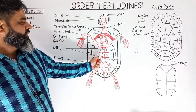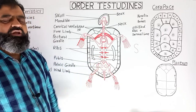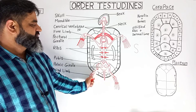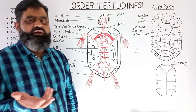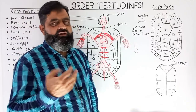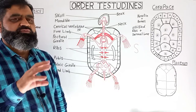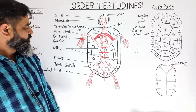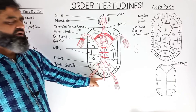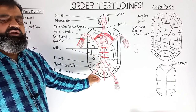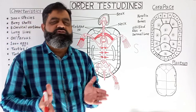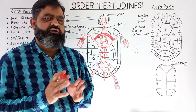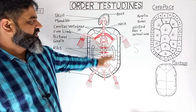Posterior to the lumbar and thoracic vertebrae is the pelvic girdle region, with bones such as the ischium and pubis, to which the hind limbs are attached. The hind limbs include the tibia, fibula, tarsals, metatarsals, and other bones. These hind limbs can move out of the shell and retract back into it during danger. At the posterior side of the pelvic girdle are caudal vertebrae which form a small tail region.